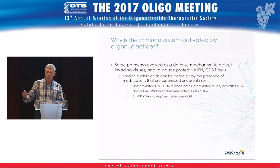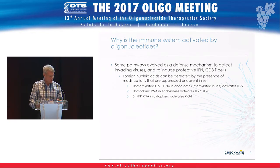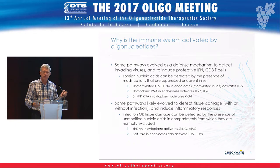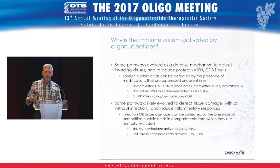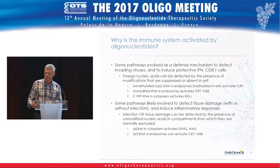The immune system doesn't easily produce lots of interferon because it's costly and can lead to toxicity, but in these cases there's no choice. Some pathways recognizing nucleic acids probably also function to detect tissue damage. When tissues are damaged, the contents including nucleic acids are released, and nucleic acids can wind up being detected in compartments within cells from which they're normally excluded.